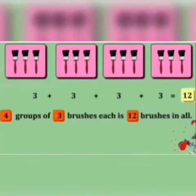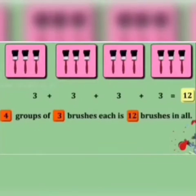Let us see another example. Here we have 4 groups and in each group there are 3 brushes. So if we want to calculate the number of brushes, we will add 3 four times. So we get the answer as 12.